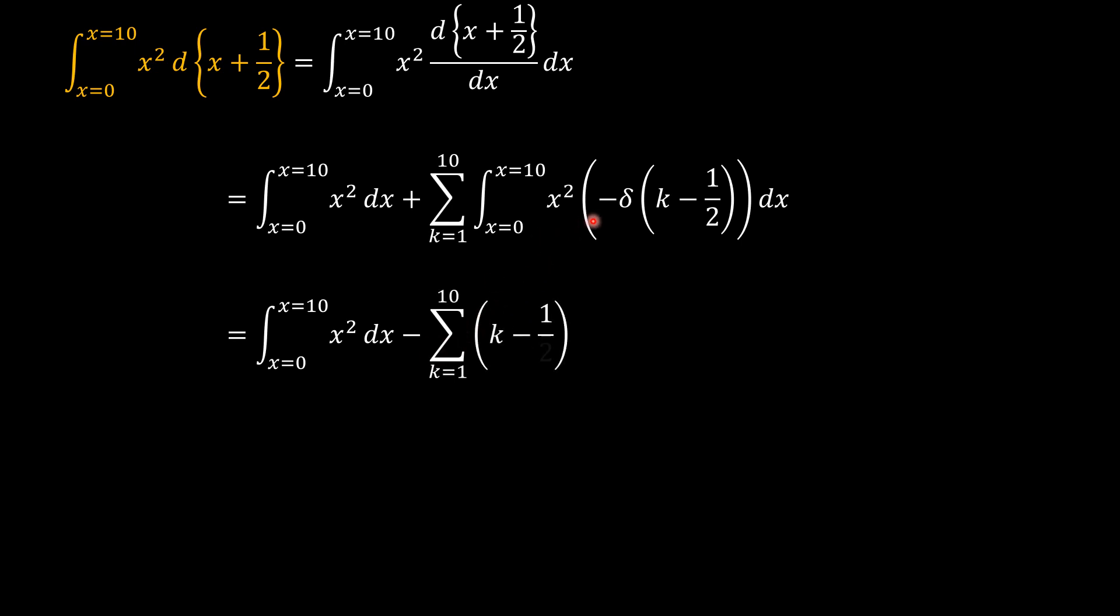x squared, and x at this point is k minus one-half. This is what our integral of the negative Dirac delta times x squared yields: the square of k minus one-half.